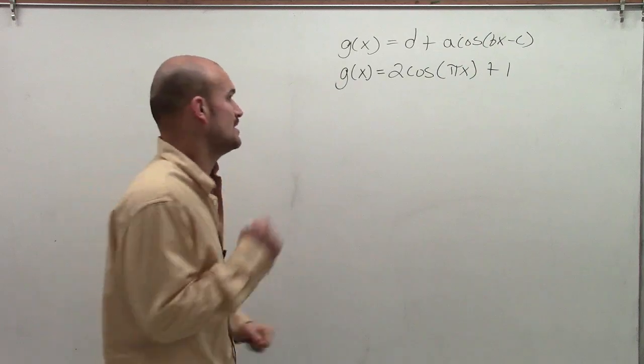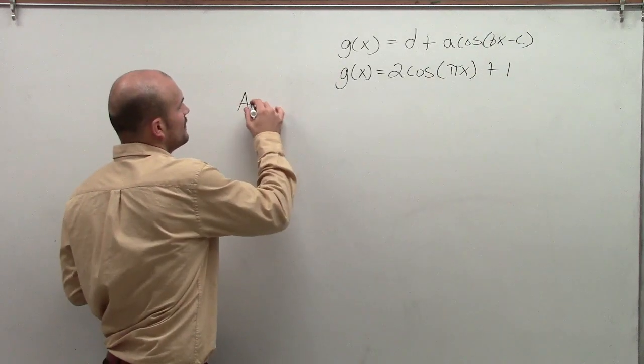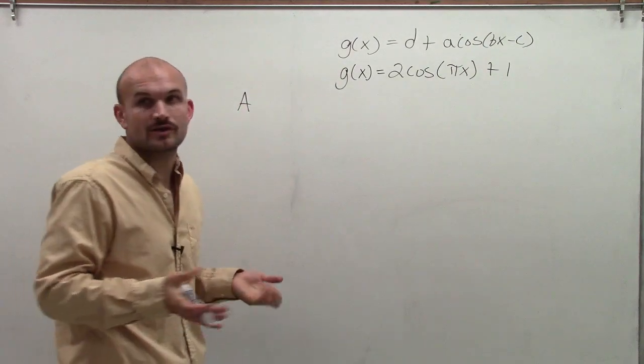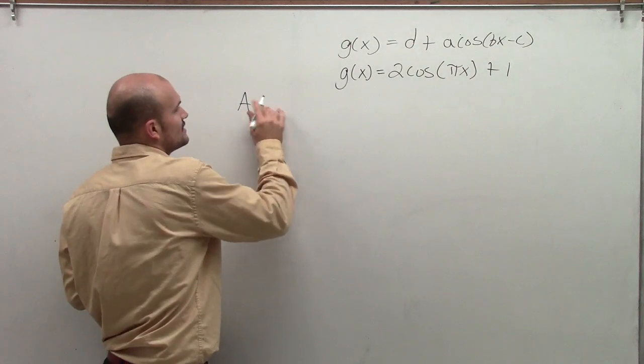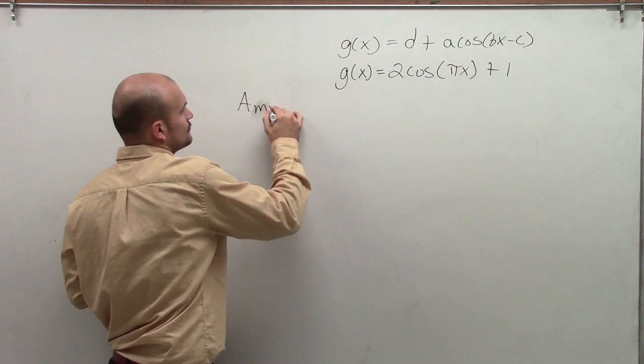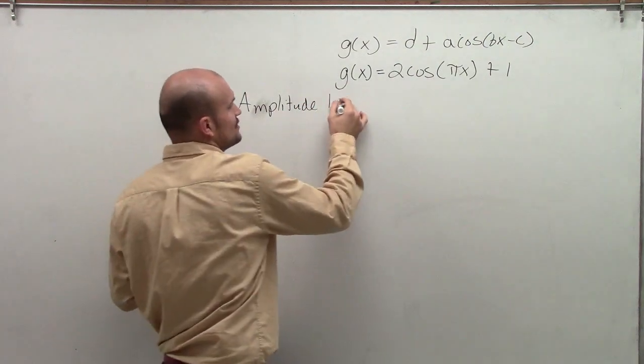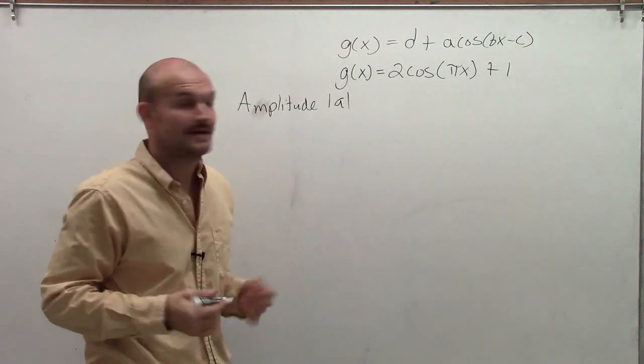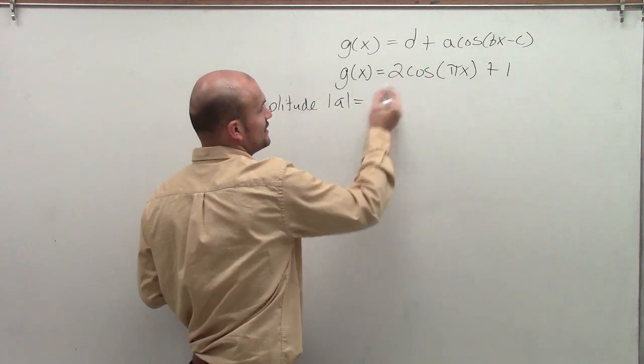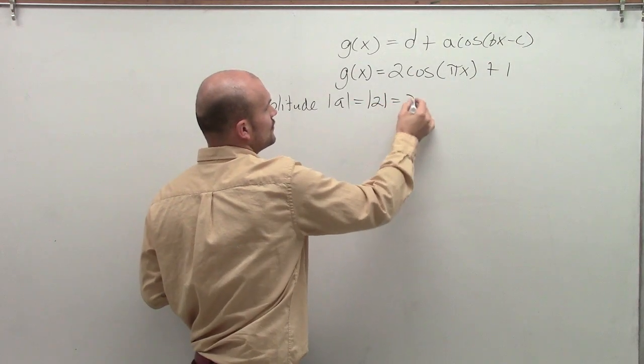So by using this information, now what I'm going to do is figure out the important parts of a trigonometric graph. The first part is the amplitude. So in determining the amplitude, that's going to be the absolute value of a, which in this case is going to be 2. So the absolute value of 2 is 2.